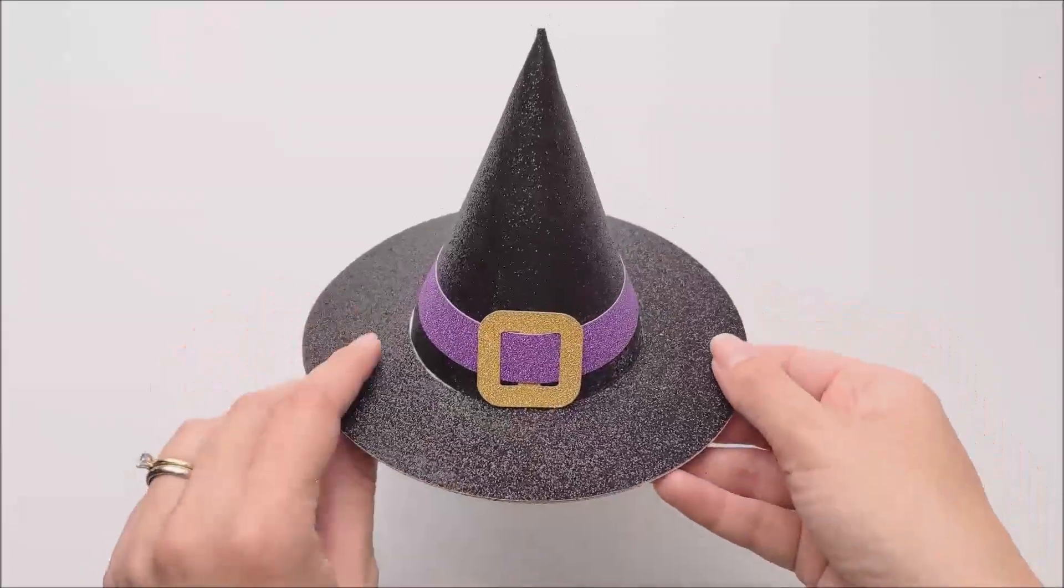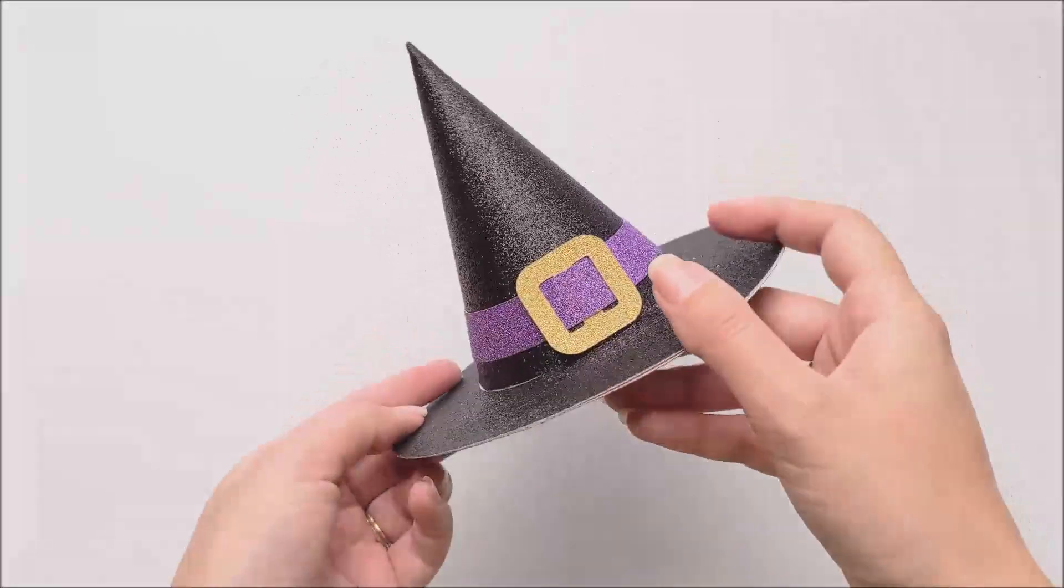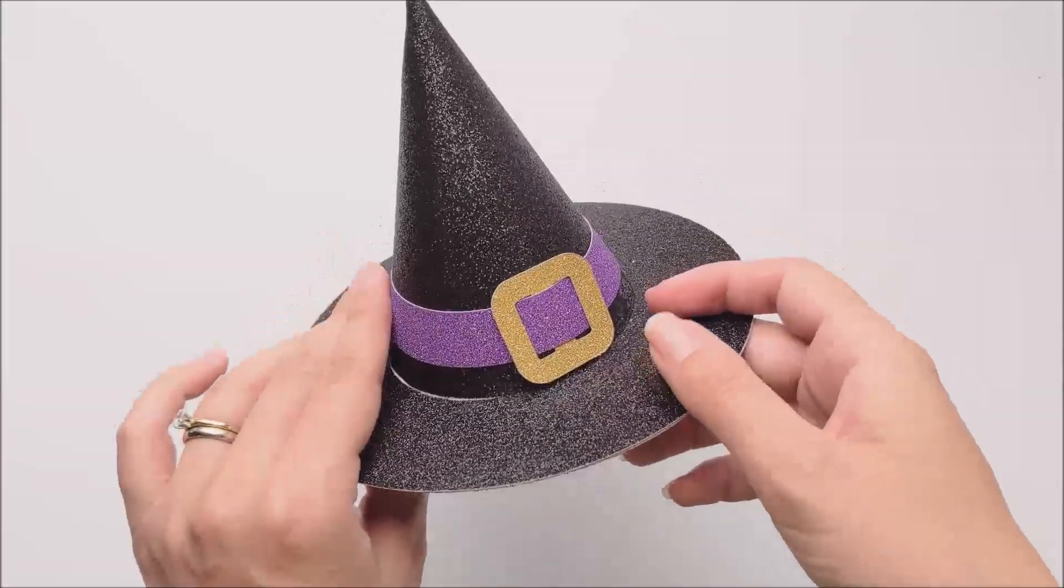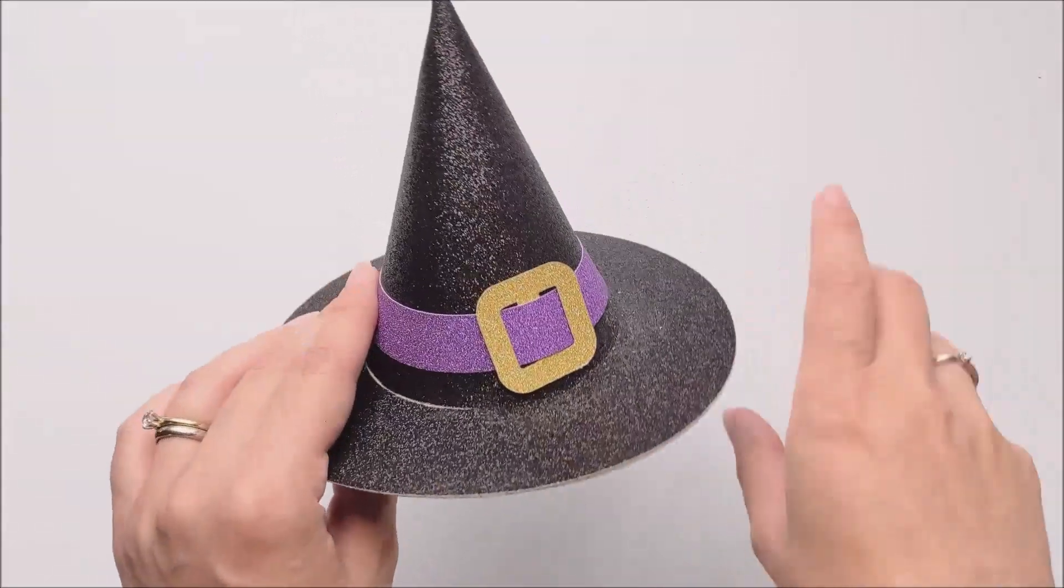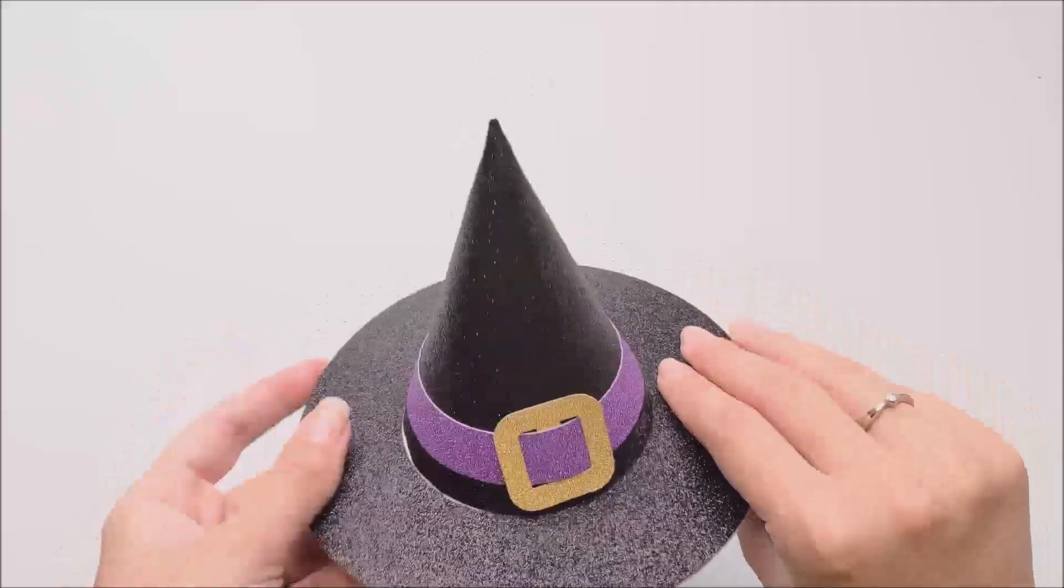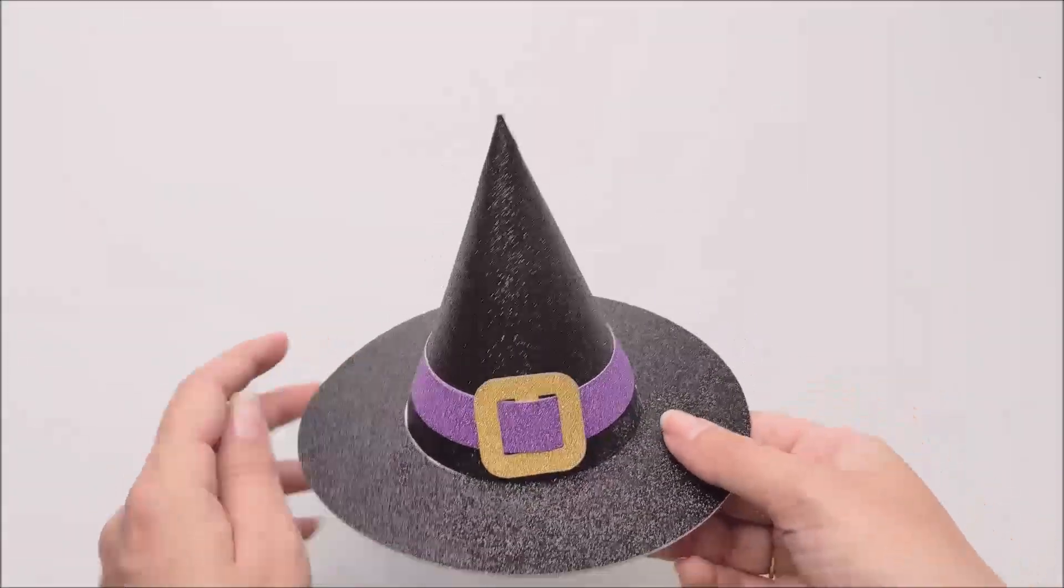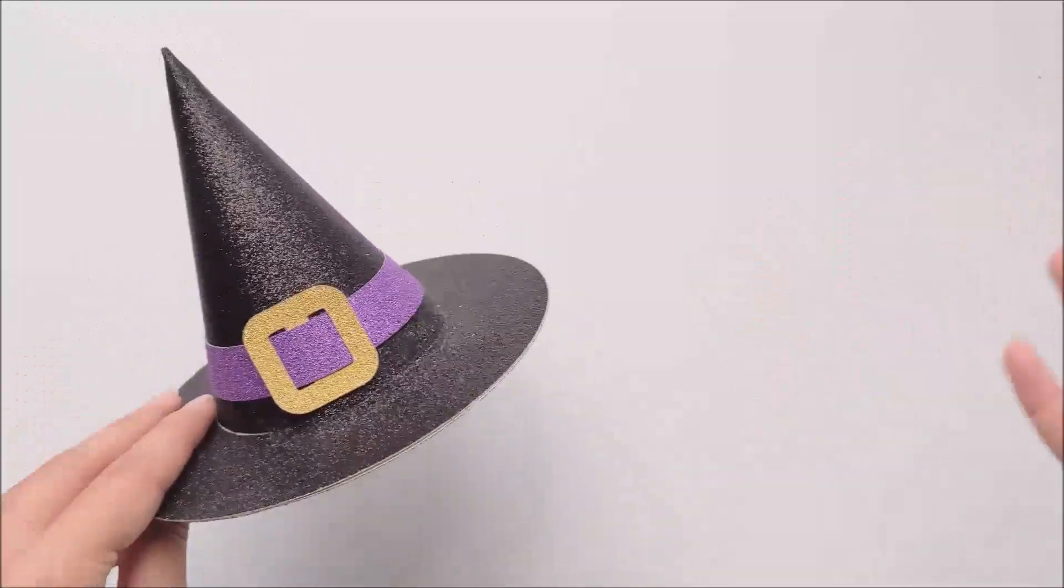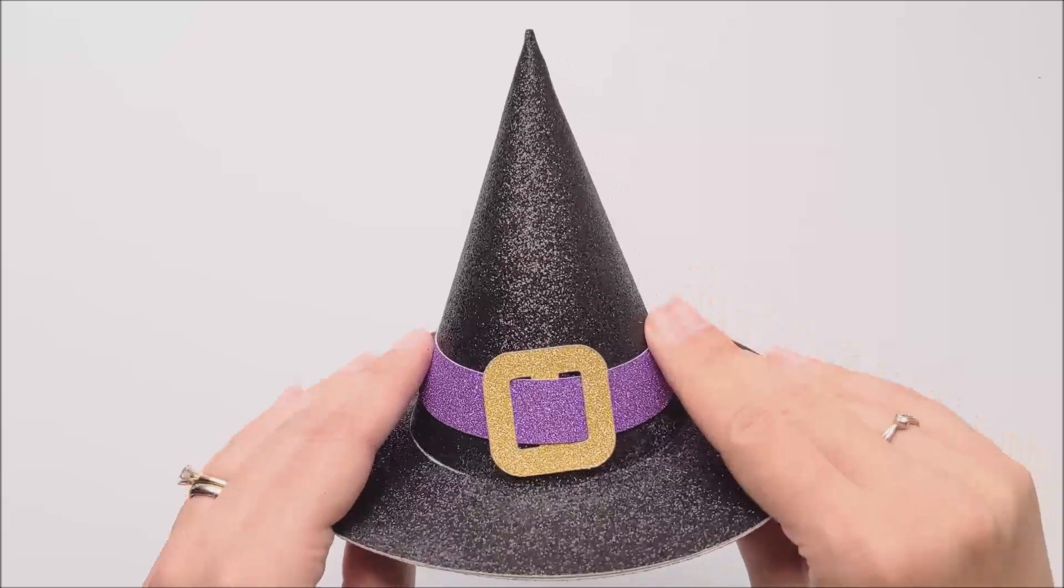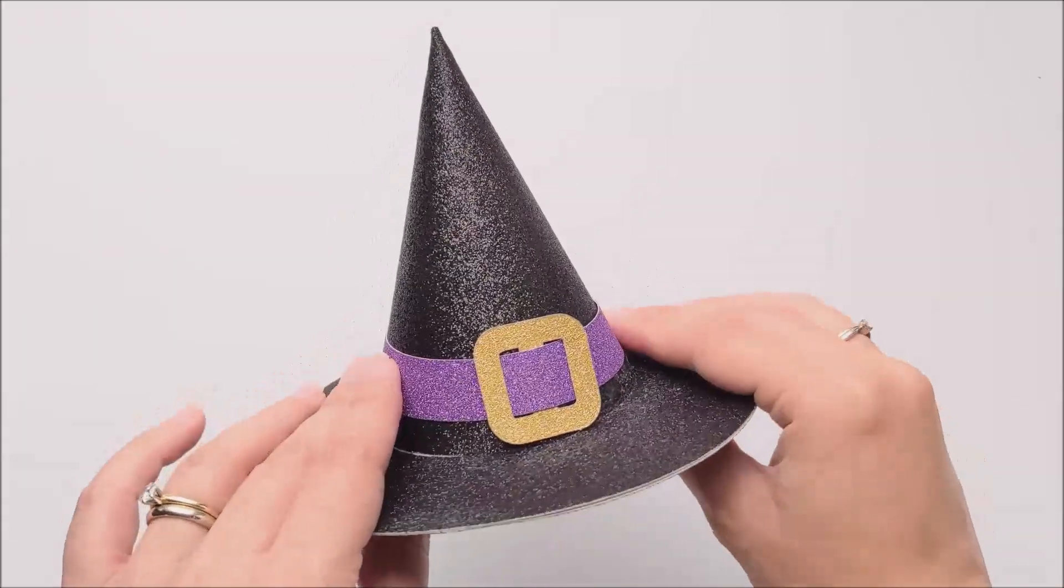And there we have it. We've got our completed witch hat. This size is great for a fascinator. If I wanted to, I could attach a little hair clip here, or attach it to a headband if I wanted to wear it, or it could just be a decoration. You can make it any size you need. You can make it doll size, really small. Depending on your material size, you could make it a lot bigger. It's really up to you. Pretty versatile little design, great for Halloween. Hope you enjoyed!